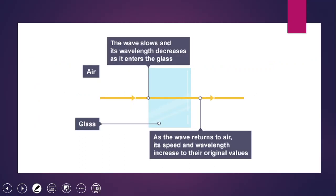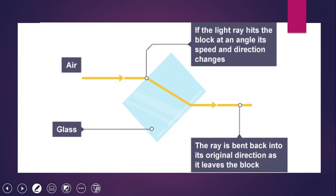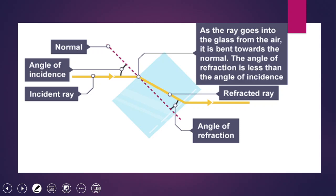The wave slows down and its wavelength decreases as it enters the glass. If the light ray hits the block at an angle, both its speed and direction change. The ray bends back into the original direction as it leaves the block. As the ray enters the glass it bends towards the normal, so the angle of refraction is less than the angle of incidence.